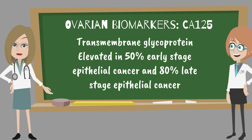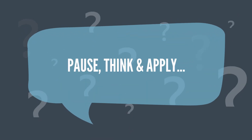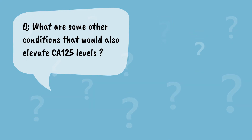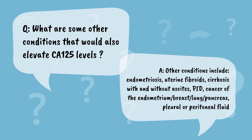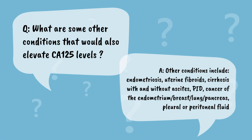CA-125 is a large transmembrane glycoprotein derived from both coelomic and Müllerian epithelia. It can be elevated in 50% of women with early epithelial cancer and 80% with late stage. Unfortunately, CA-125 can also be elevated in several other conditions that cause peritoneal inflammation, which limits its specificity for ovarian cancer. Other conditions include endometriosis, uterine fibroids, cirrhosis with and without ascites, PID, cancer of the endometrium, breast, lung, and pancreas, and pleural or peritoneal fluid.